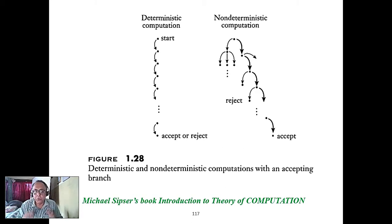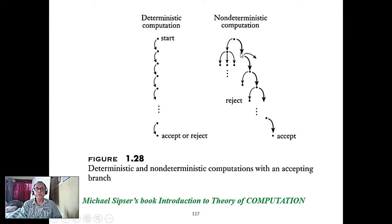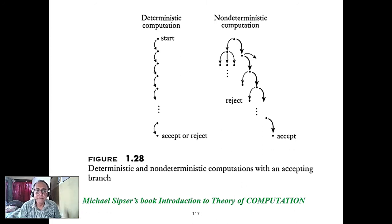This is a very interesting diagram from Sipser's book showing deterministic and non-deterministic computation. Non-deterministic computation can take any path — if any path leads to acceptance, it accepts. To actually design this hardware is impossible, so ultimately we must convert non-deterministic finite automata to deterministic finite automata. This may result in more states but can be physically realized.